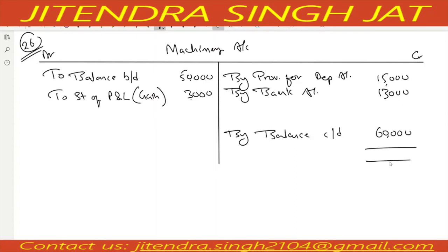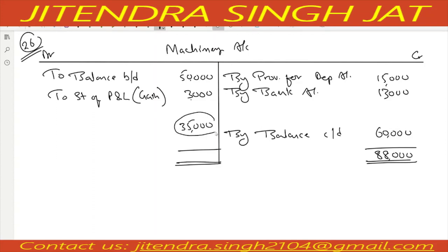All points are over. Credit side total: 60,000 plus 70,000 plus 80,000 equals 88,000. Then 88,000 minus 53,000 equals 35,000 remaining on debit side. If balance remains on debit side, it means purchase — to bank: purchase of machinery 35,000.